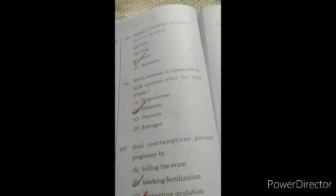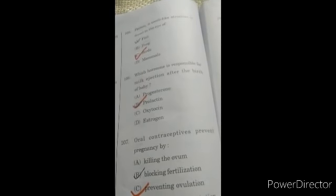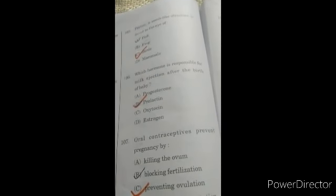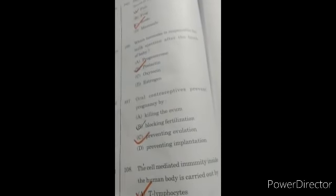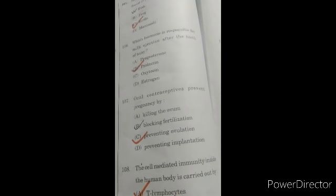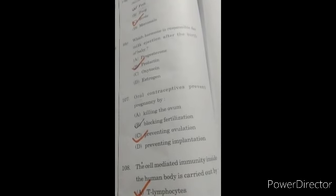Pectin, a comb-like structure, is found in the eye of C option, birds. Which hormone is responsible for milk ejection after the birth of baby? B option, prolactin. Question 107: oral contraceptive prevents pregnancy by preventing ovulation, C option.